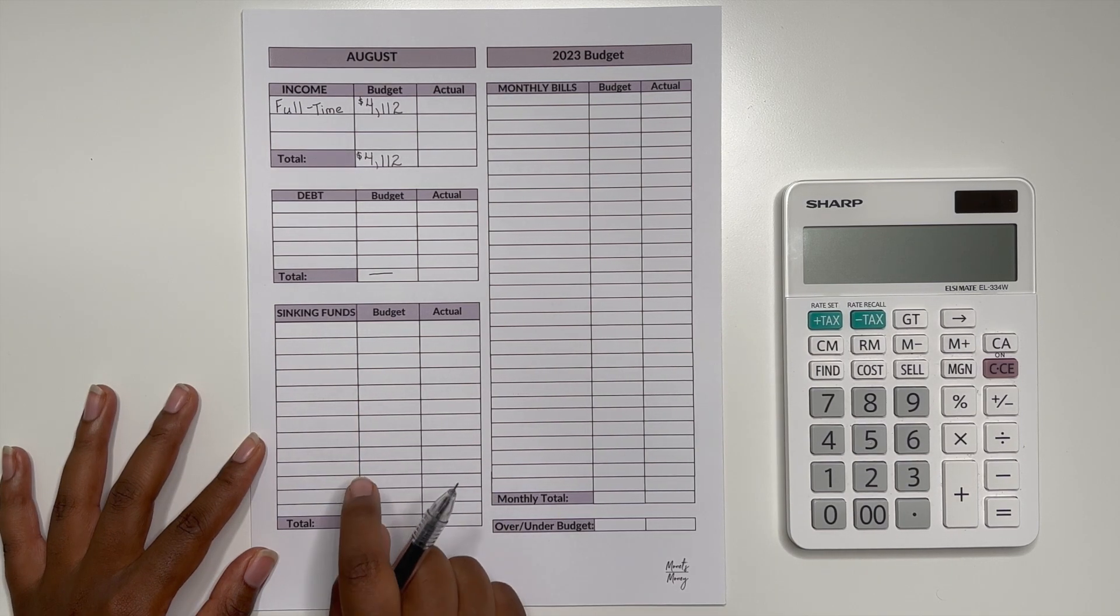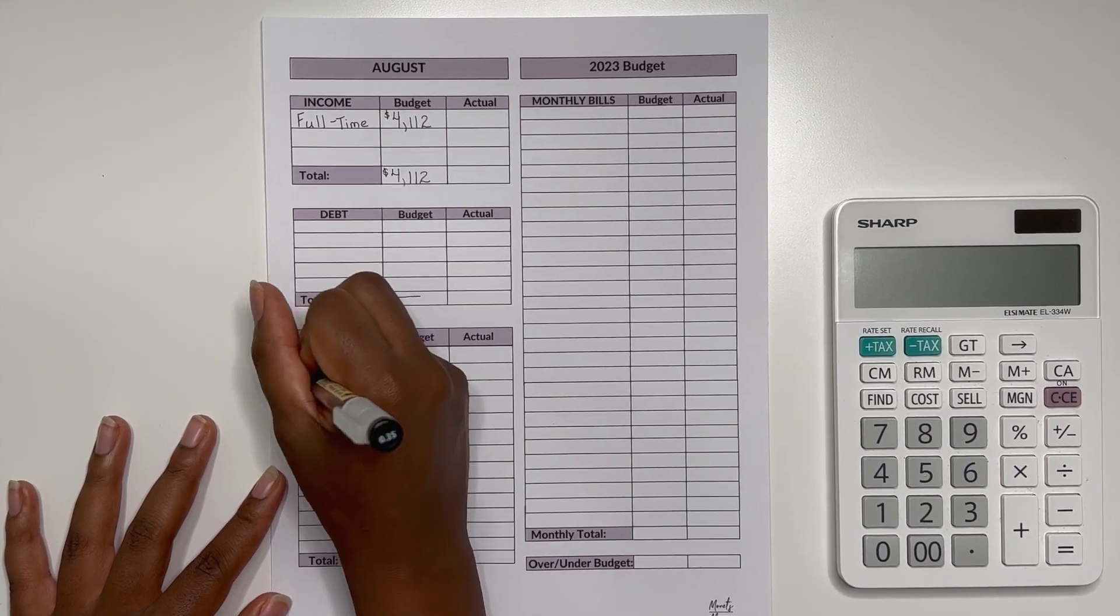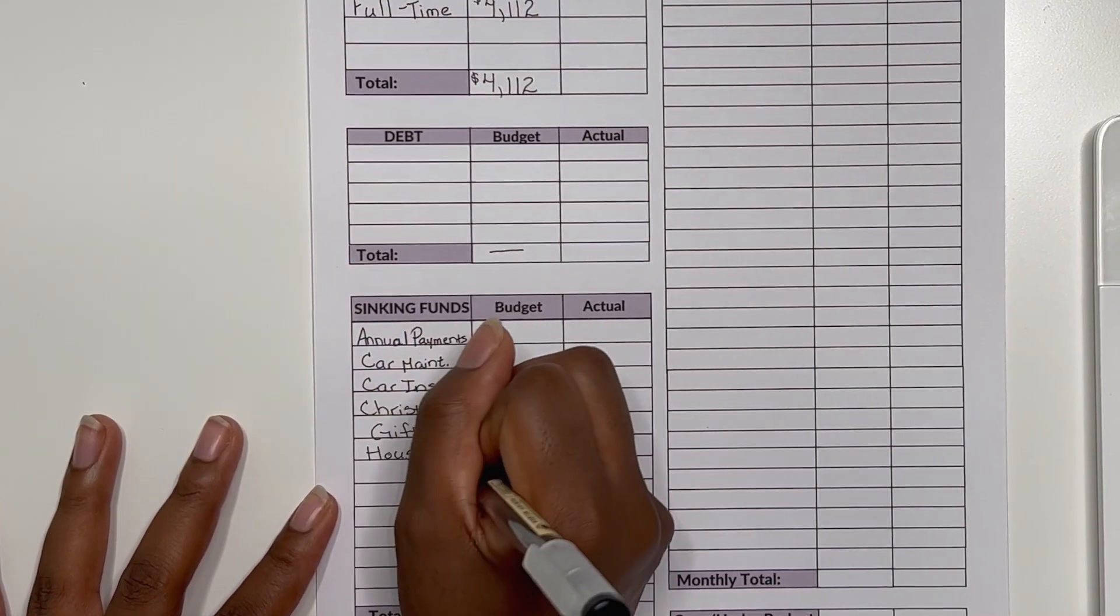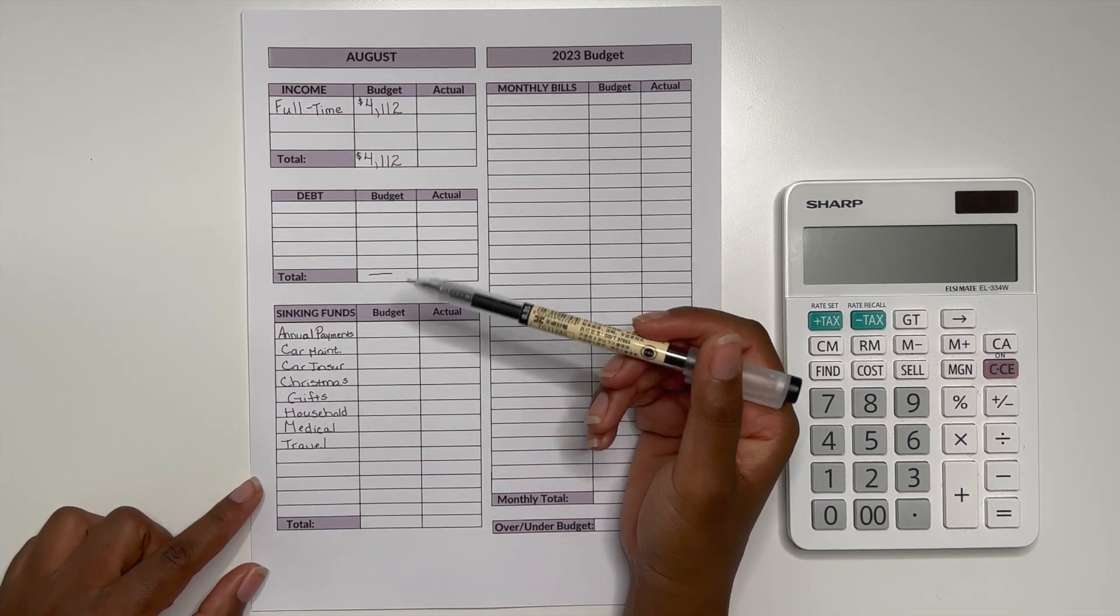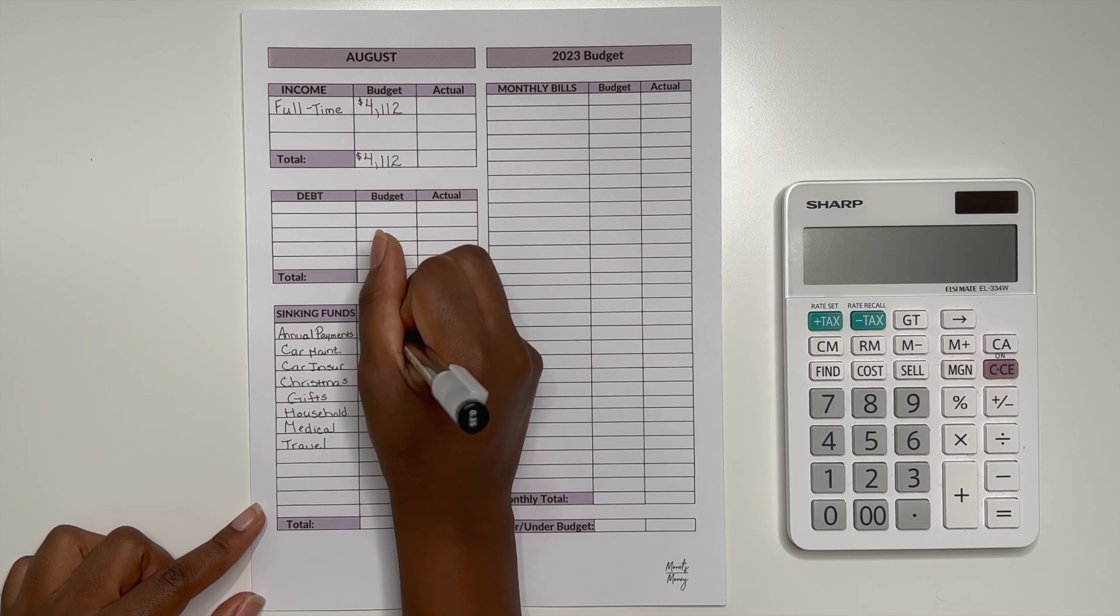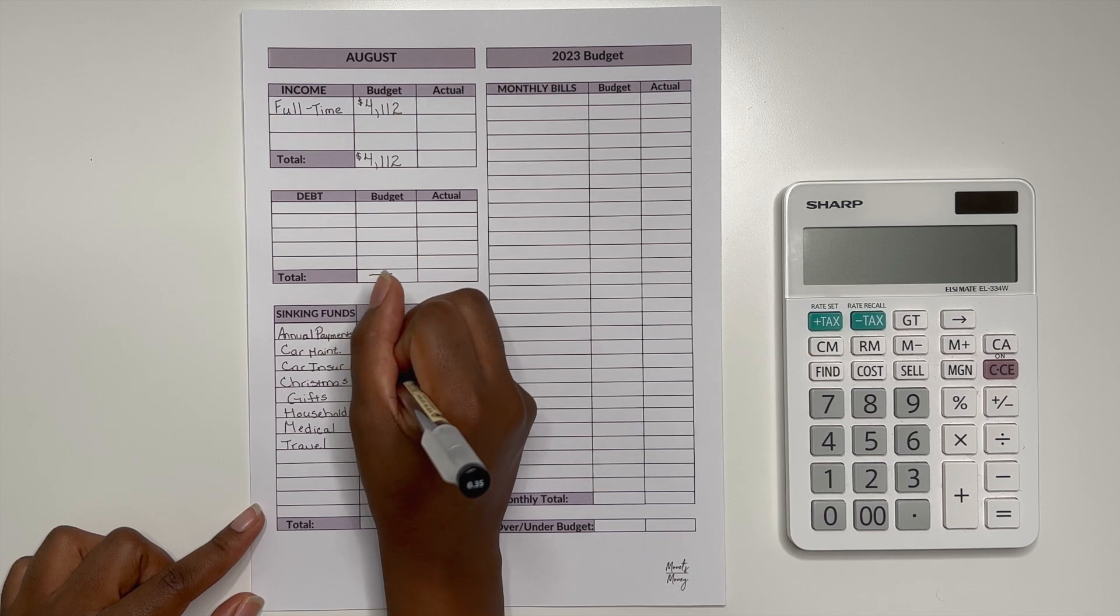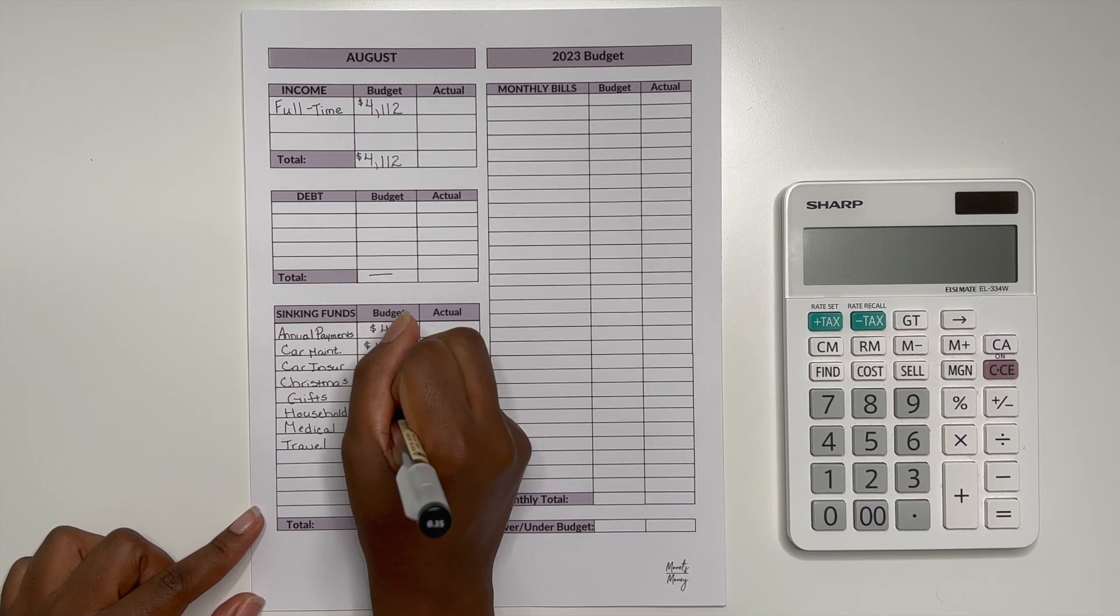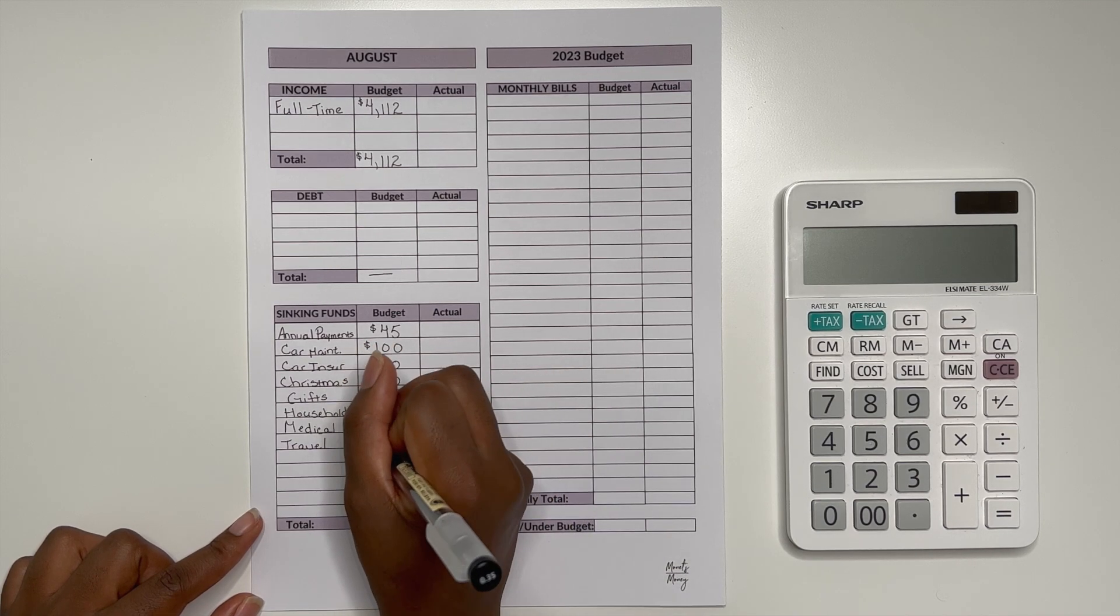And I'll get started with listing my sinking funds. Alright so here are all of my sinking funds that I am trying to budget for this month. And for annual payments I am going to try and save $45 for the month. Car maintenance I would like it to receive $100 for the month. Car insurance getting $80 for the month. Christmas with $40. Gifts at $25. Household with $60. Medical with $20. And travel with $160.